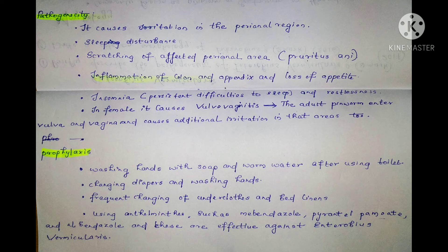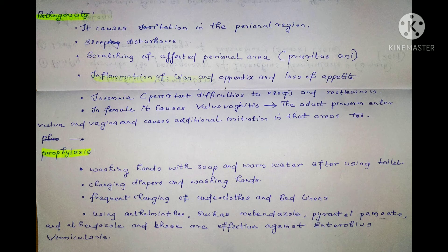There can eventually be worm-caused inflammation and disease. The infection can cause malnutrition and insomnia. In the case of females, during the menstruation period there are disturbances in the vaginal areas.